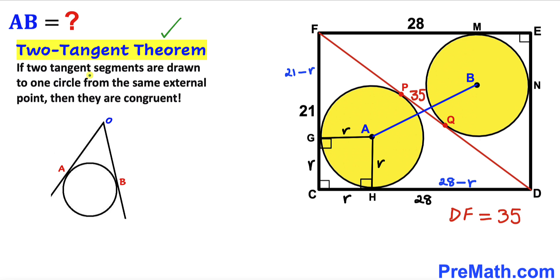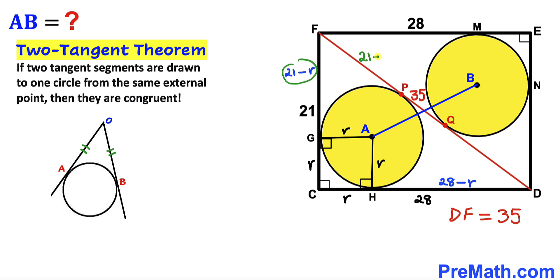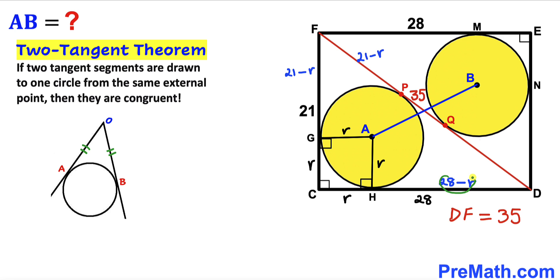By the two tangent theorem, if two tangent segments are drawn to one circle from the same external point, they are congruent. Applying this, tangent FG equals tangent FB, so FB is also 21 minus r. Similarly, tangent DH equals tangent DE, so DE is also 28 minus r.